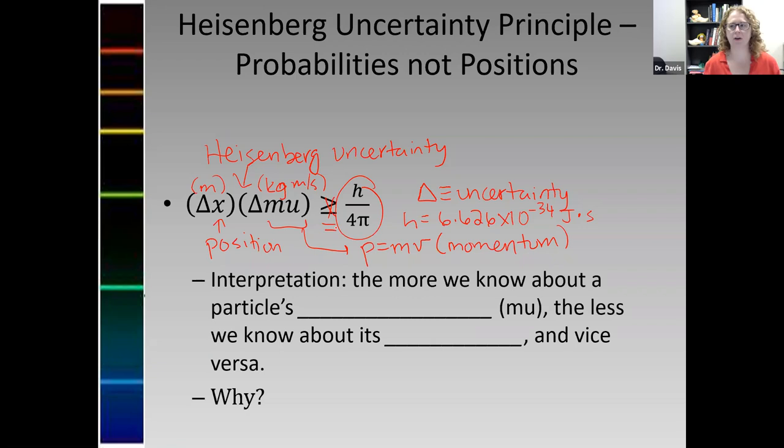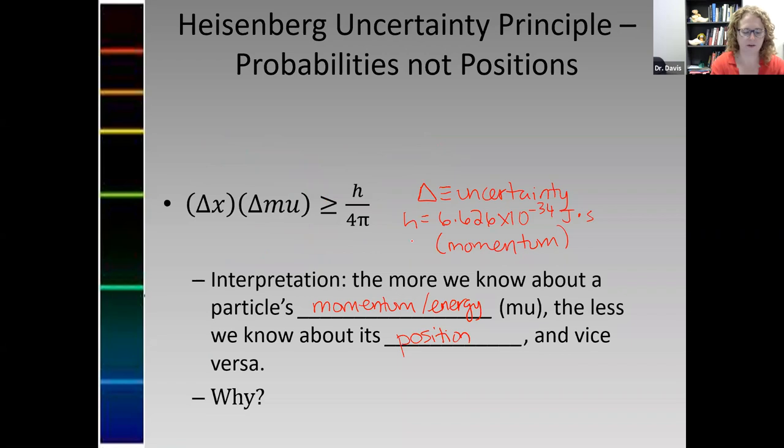But the interpretation is the important part of our short guide to quantum mechanics. What it says is the more we know about a particle's momentum. And by the way, momentum is related to energy. The less we know about its position. And of course, vice versa. The idea is that if delta x goes up, then delta mu can go down in response. Because of this greater than or equal to, the more I know about position, or sorry, the less I know about position, because the higher the uncertainty gets, the more I know about momentum.